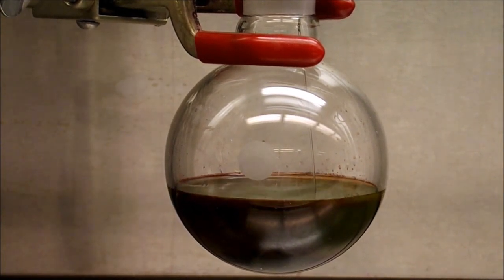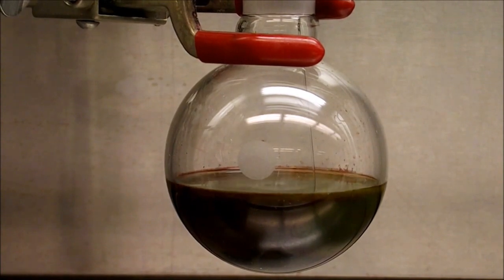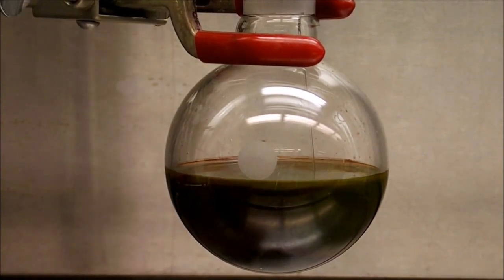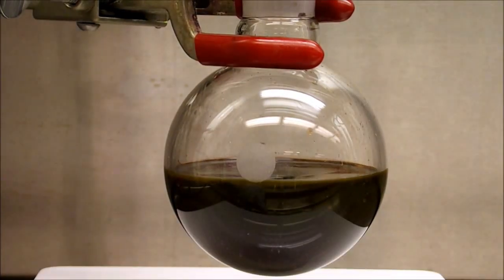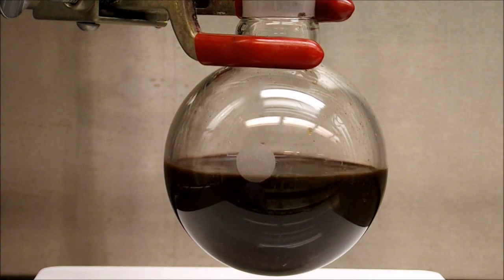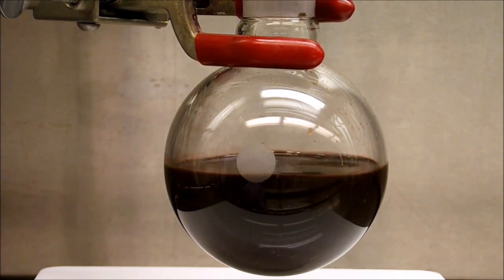Once the stirring is turned on, the potassium carbonate deprotonates the PDI and gives the purple compound we saw last video. This color change can be used as a method to determine the completion of the reaction, as once all the PDI is alkylated, it can no longer be deprotonated and the reaction turns back to the dark red color.